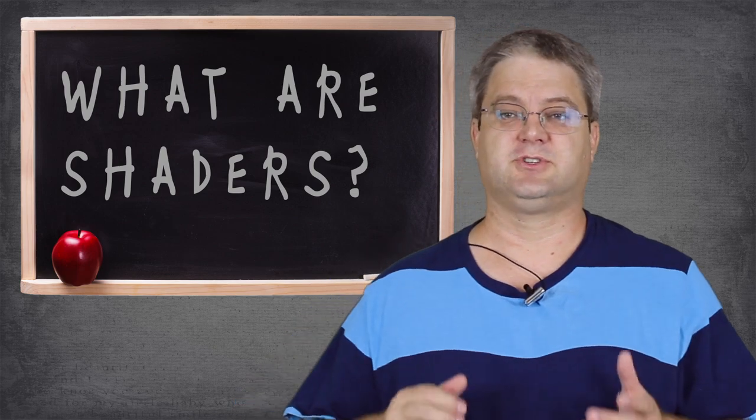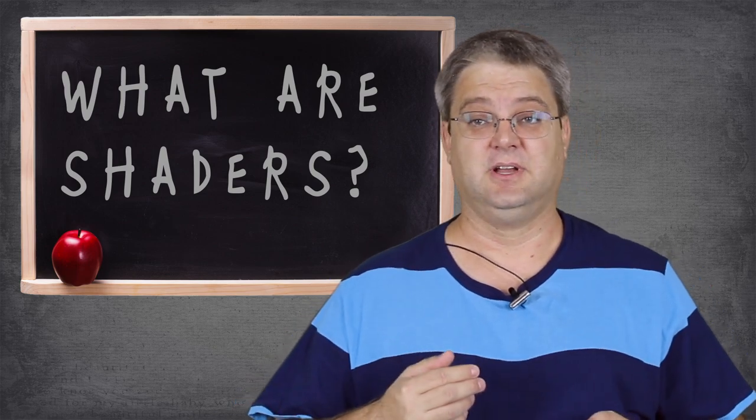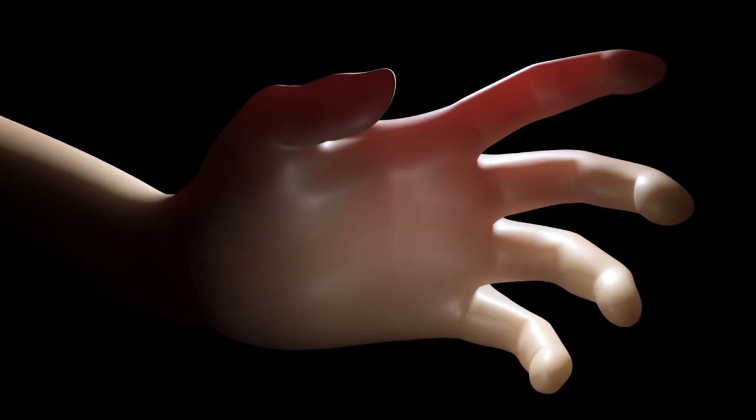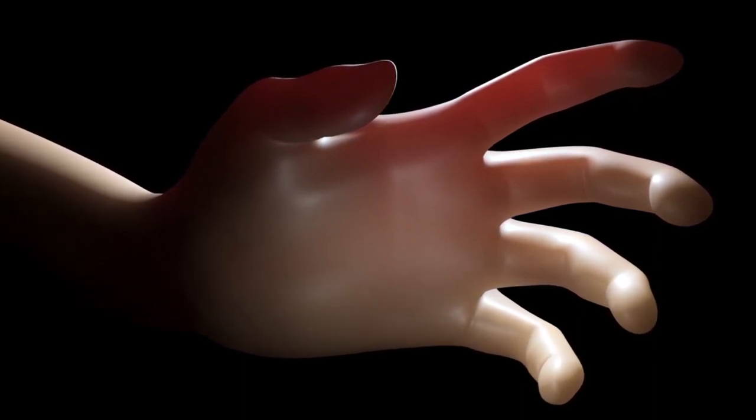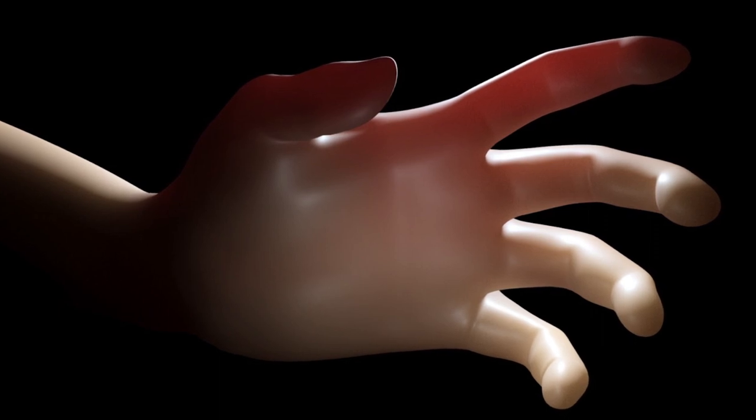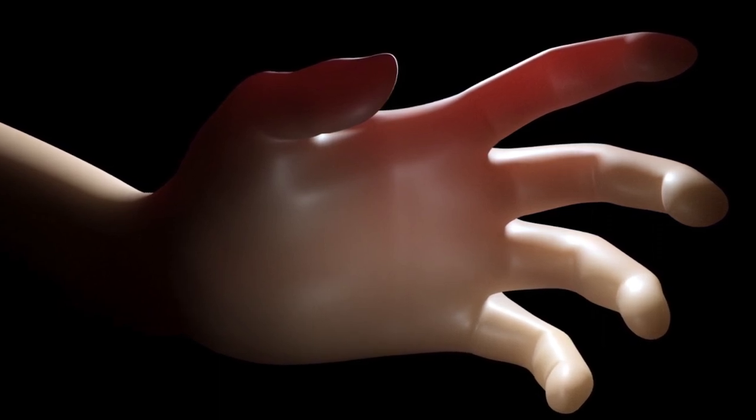Some advanced shaders have what's called subsurface scattering. This simulates light's ability to penetrate and then scatter within an object. Ever put your finger to a light and see it glow red from the inside? That is an example of subsurface scattering.